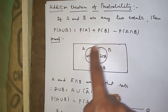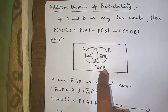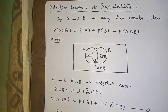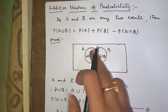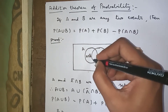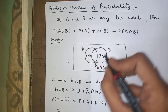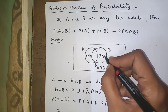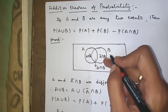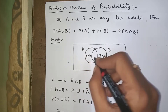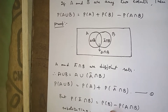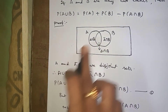In the Venn diagram, we have set A and set B. The middle region is A ∩ B. The region A ∩ B̄ means A intersection not-B, which is the left part only. The region Ā ∩ B means not-A intersection B, which is the right part only. The middle part is A ∩ B.